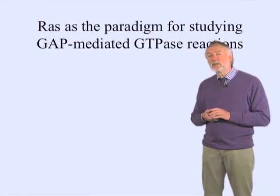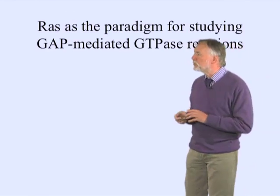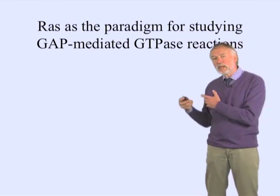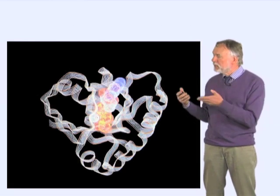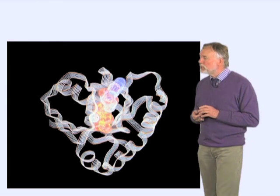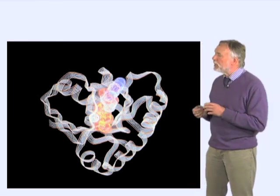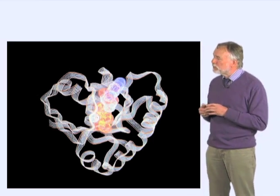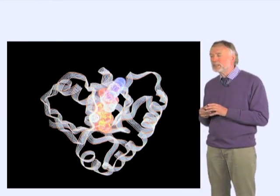Let's start with RAS and its GAP-mediated GTPase reaction, because that is really the paradigm for many of the things developed afterwards. This is the molecule RAS — a ribbon representation of the structure of the G-domain of RAS. It's heart-shaped because we solved the structure in Heidelberg, where the city has the advertisement 'Ich habe mein Herz in Heidelberg verloren,' which means 'I lost my heart in Heidelberg.'